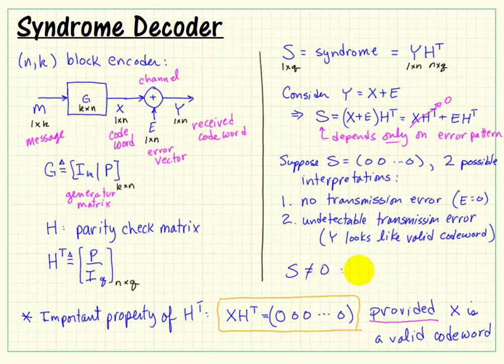Whenever S is not equal to 0, then we say that an error has, in fact, been detected. Again, not all errors can possibly be detected, but certain error types can.